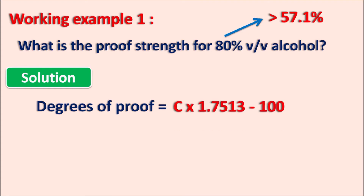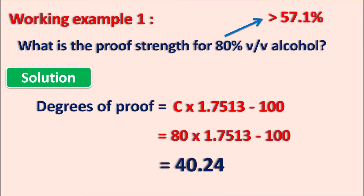Degrees of proof = C × 1.7513 − 100. Here C is 80, so: 80 × 1.7513 = 140.24, and 140.24 − 100 = 40.24. The degrees of proof is 40.24, and since we get a positive value — because 80 × 1.7513 = 140.24 is greater than 100 — this solution is 40.24 degrees overproof.